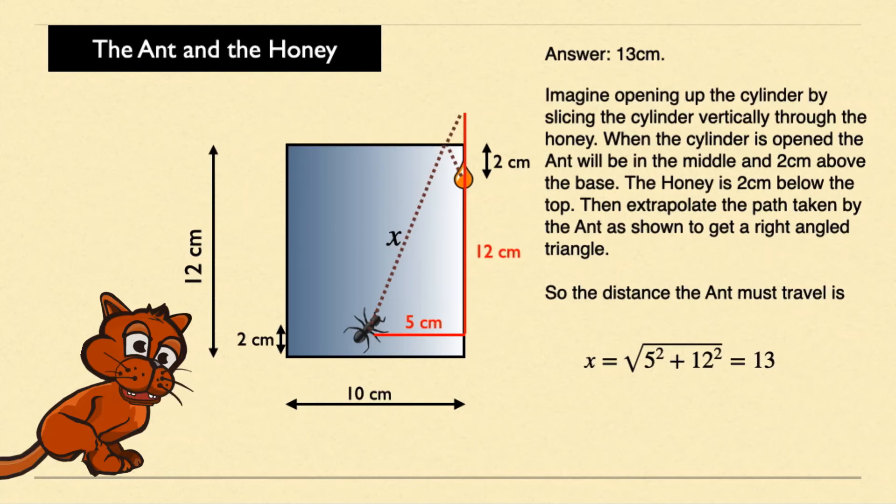So the distance the ant must travel is given by the formula x equals the square root of five squared plus twelve squared, which equals the square root of 169, which equals thirteen.